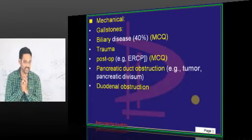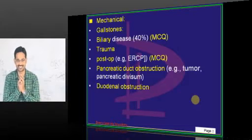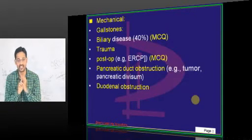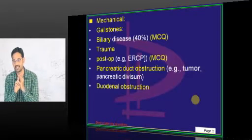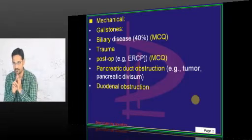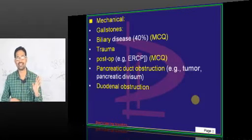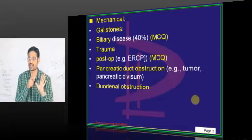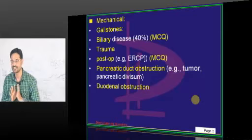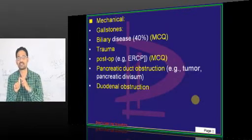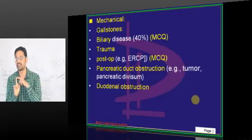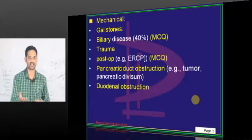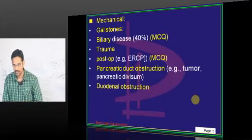Out of amylase and lipase, lipase is more specific to the pancreas. Amylase is seen in multiple disorders — salivary gland inflammation, idiopathic hyperamylasemia, mesenteric infarction, upper GI bleed, torsion (ovarian or other organs), peptic ulcer perforation, pelvic inflammatory disease, ectopic pregnancy, and retroperitoneal hematoma. Amylase is only 70% specific, while lipase is 90% specific.